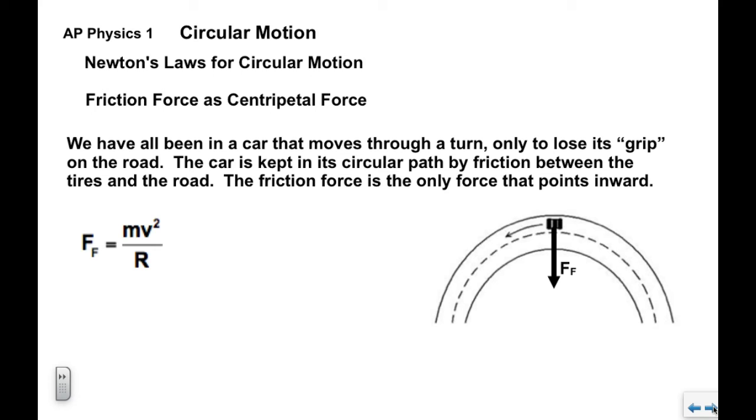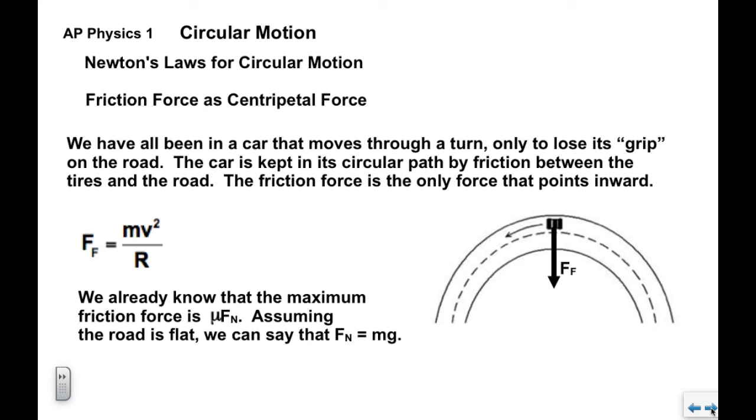We would say that the friction force equals mv squared over r. The m is the mass of the car, V is how fast it's moving, R is the radius of the turn. We're already familiar with the maximum friction force that can exist between an object and a surface. We know that it's mu times fn. Assuming the road is flat, we can say that fn equals mg. It's not on the diagram because it actually points into the screen. mg points into the screen, fn of course points out of the screen at you.